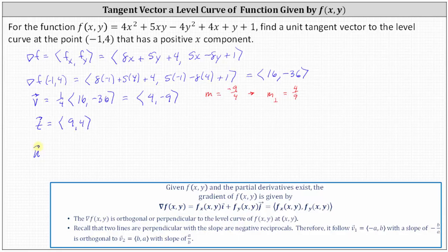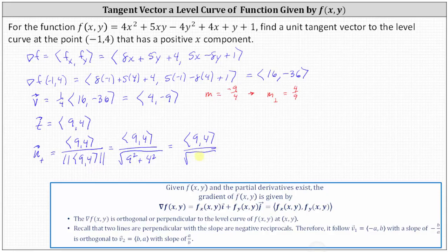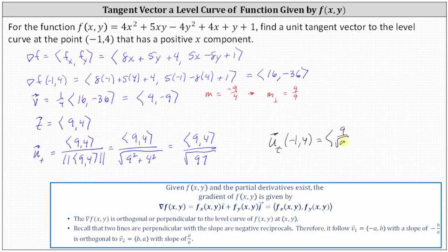Let the unit tangent vector be u sub t, which equals the tangent vector 9 comma 4 divided by its magnitude. The magnitude is the square root of the sum of 9 squared and 4 squared, which simplifies to the square root of 81 plus 16, or the square root of 97. So the unit tangent vector at negative one comma four with a positive x component has x component 9 over the square root of 97 and y component 4 over the square root of 97.